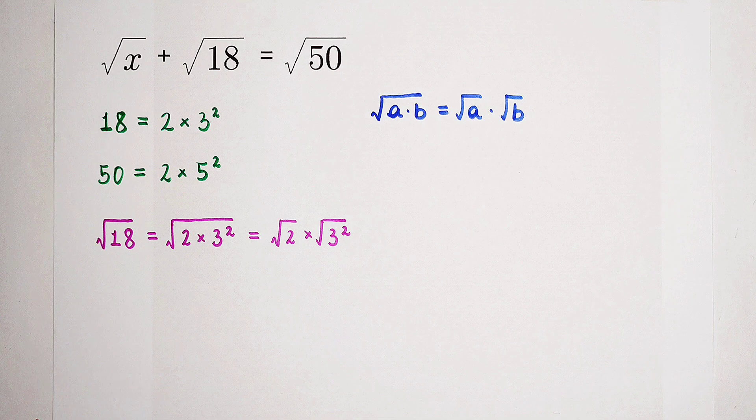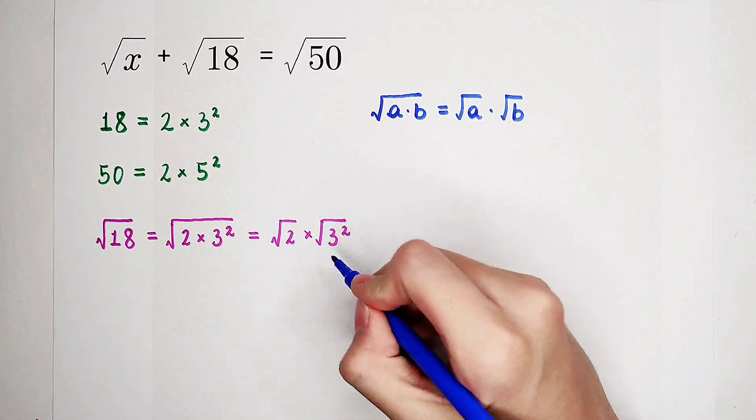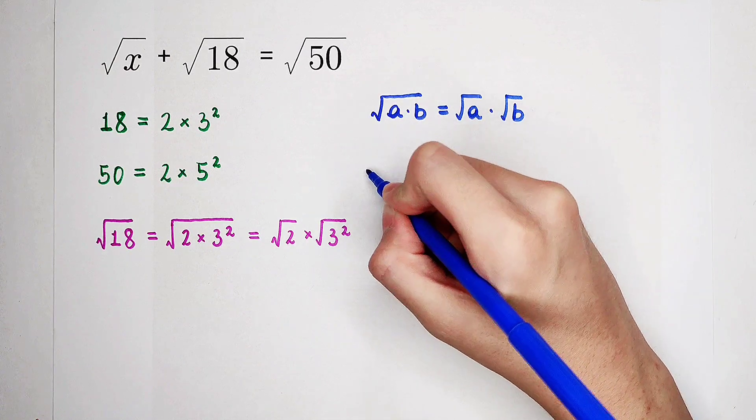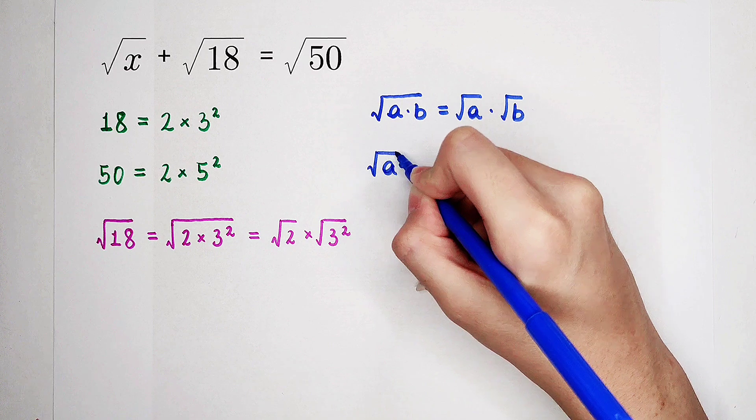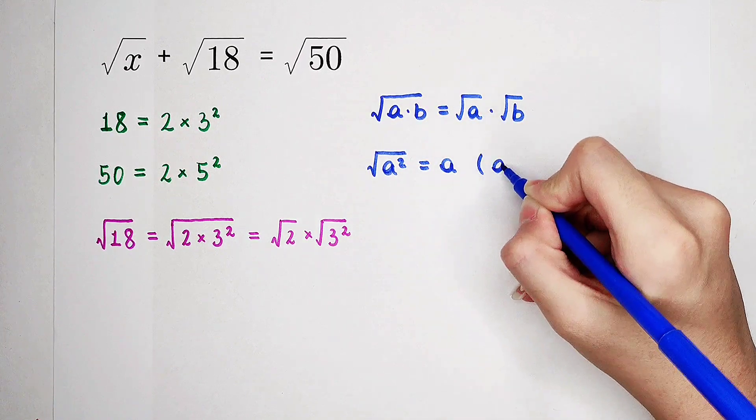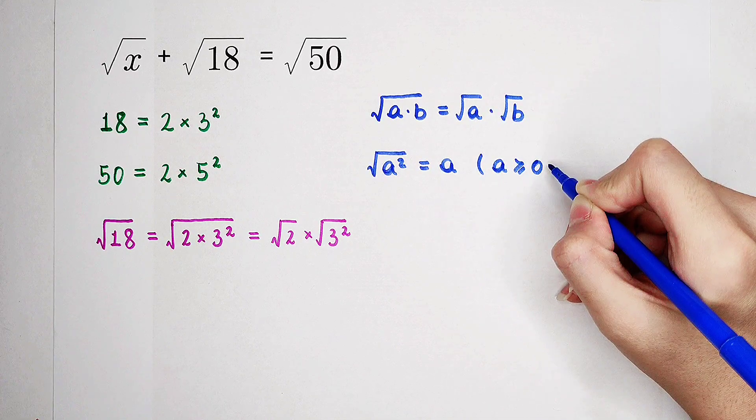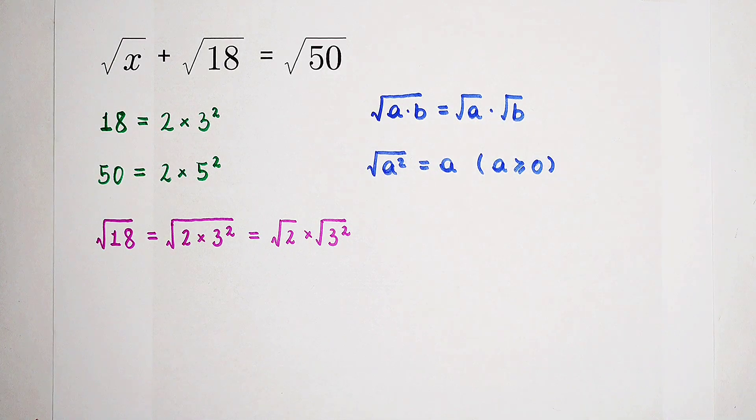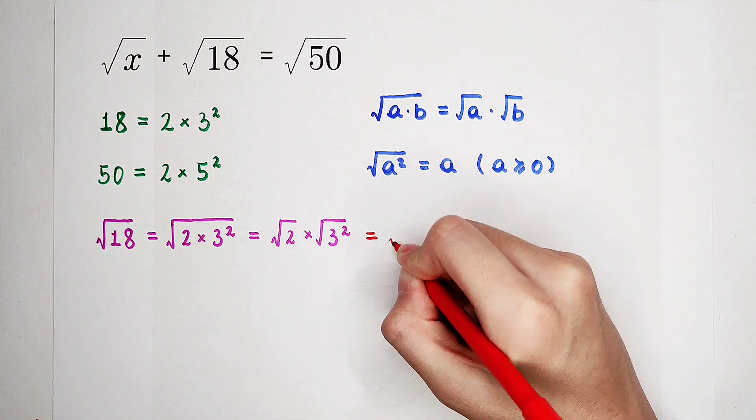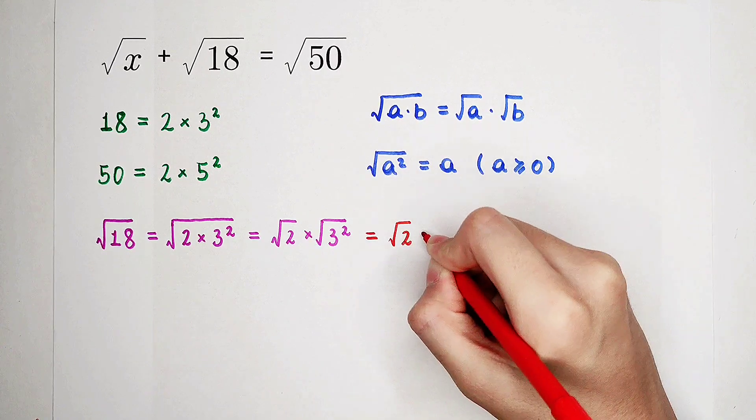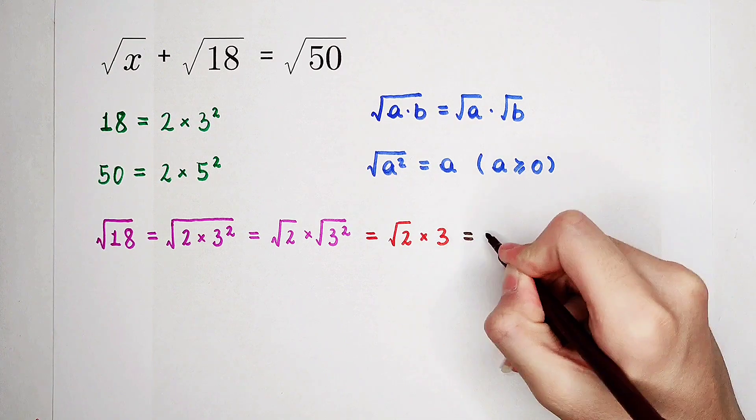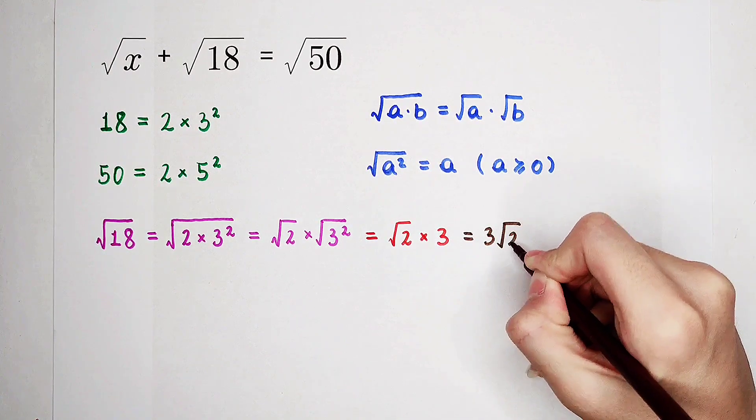And now, square root of 3 squared. Of course, it is equal to 3. Now, we should use this formula. Square root of a squared is equal to a. But pay attention. Only when a is not negative. So then, it is square root of 2, then times 3. It is 3 root 2.